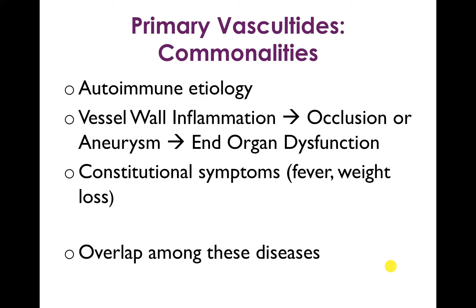Some commonalities about these primary vasculitides: the most important is that they have an autoimmune etiology, or at least a presumed autoimmune etiology. They have vessel wall inflammation leading to occlusion or aneurysm, leading to end-organ dysfunction. Another common feature — a tip-off in terms of patient presentation or on the boards — is that the patient often presents with constitutional symptoms: fever, weight loss, and fatigue. There's a lot of overlap among these diseases, so we're going to work to split them out.